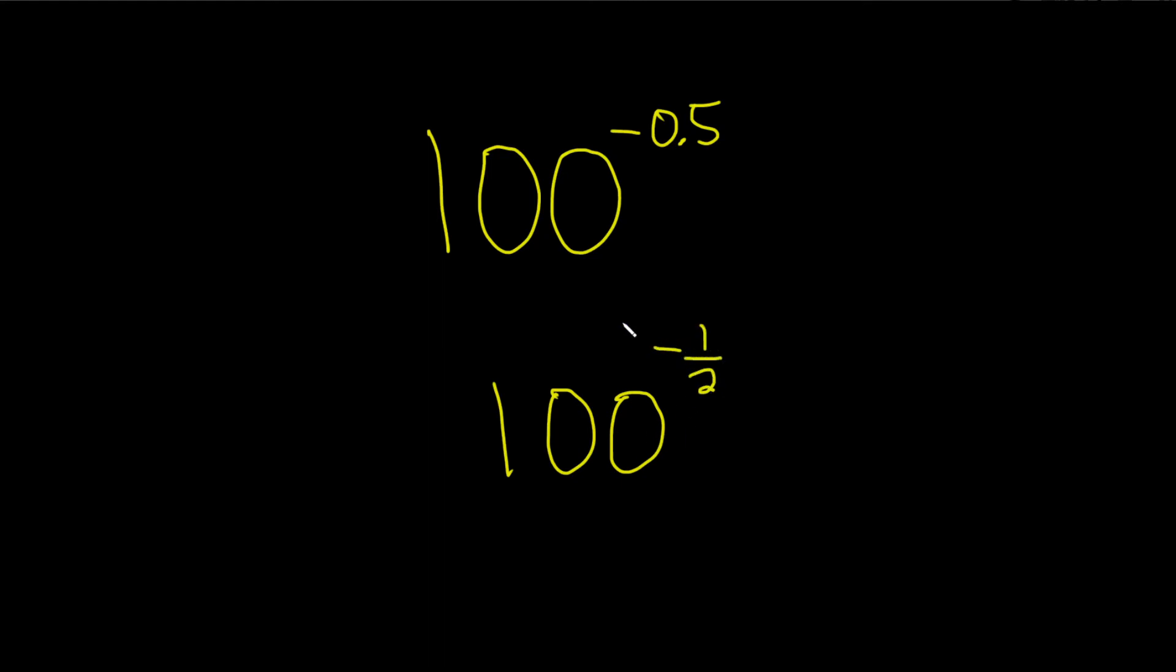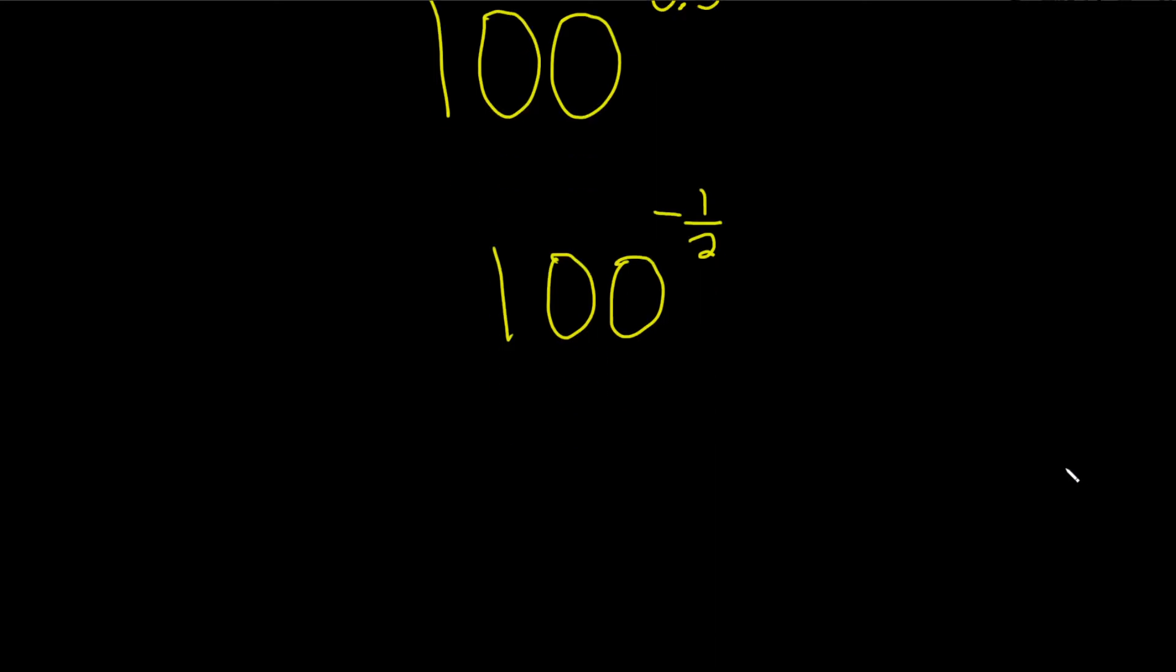Now we can focus on getting rid of the negative. To do that, we have to realize that this is really all over 1. So what we can do is take this top piece and bring it down like this.